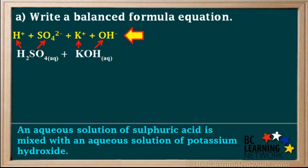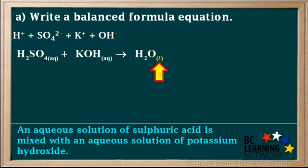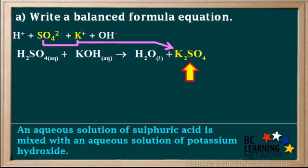To find the formulas for the products, we write down all the ions present in the reactants: H plus, SO4 2 minus, K plus, and OH minus. We combine the outside ions — H plus and OH minus — and that gives us water or H2O. Water is a liquid at room temperature, so we write the subscript L for liquid. Combining the inner two ions, K plus and SO4 2 minus, gives us K2SO4.